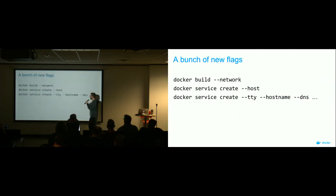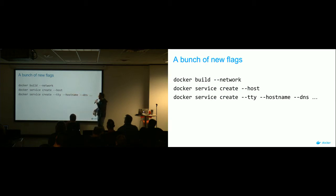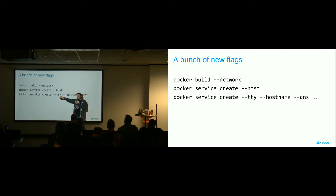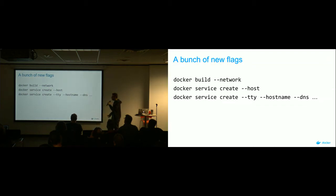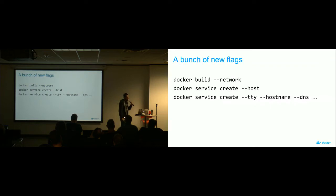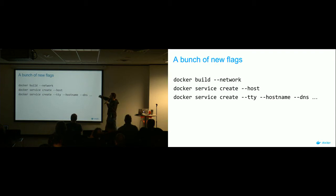There are a handful of new flags. Nothing terribly special, but if you need to be attached to a specific network when you're doing a build, that's available. They're also adding more flags and features to Docker services — that's what you run when you're in Swarm mode. A lot of these are for supporting Compose and the new stacks format as part of Docker services.